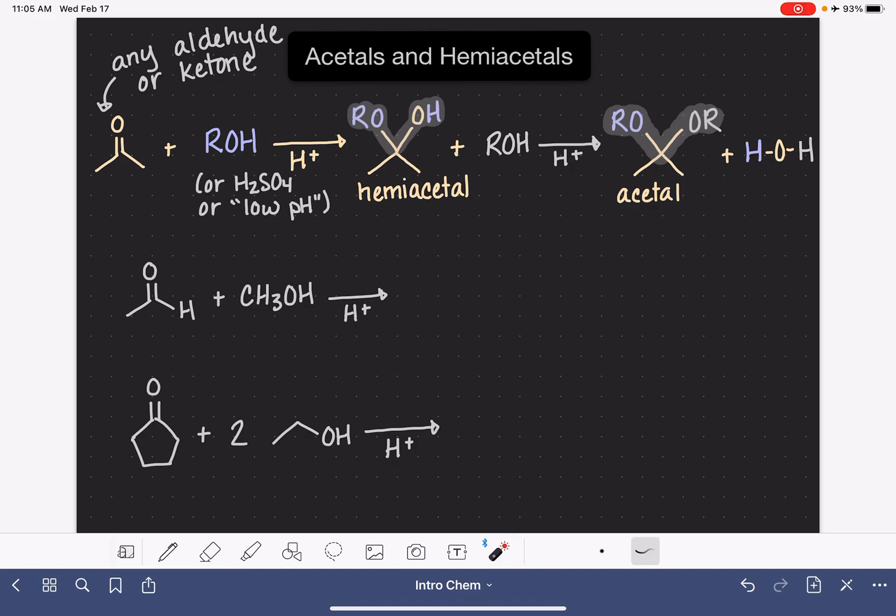Let's take a look at two examples of forming hemiacetals and acetals. Now in this reaction, you do have to pay attention to the stoichiometry, meaning exactly how many alcohols are you adding to this aldehyde or ketone. In our first example, we're only adding one alcohol, which means that we're only doing this much of the reaction right here. We're just forming the hemiacetal.